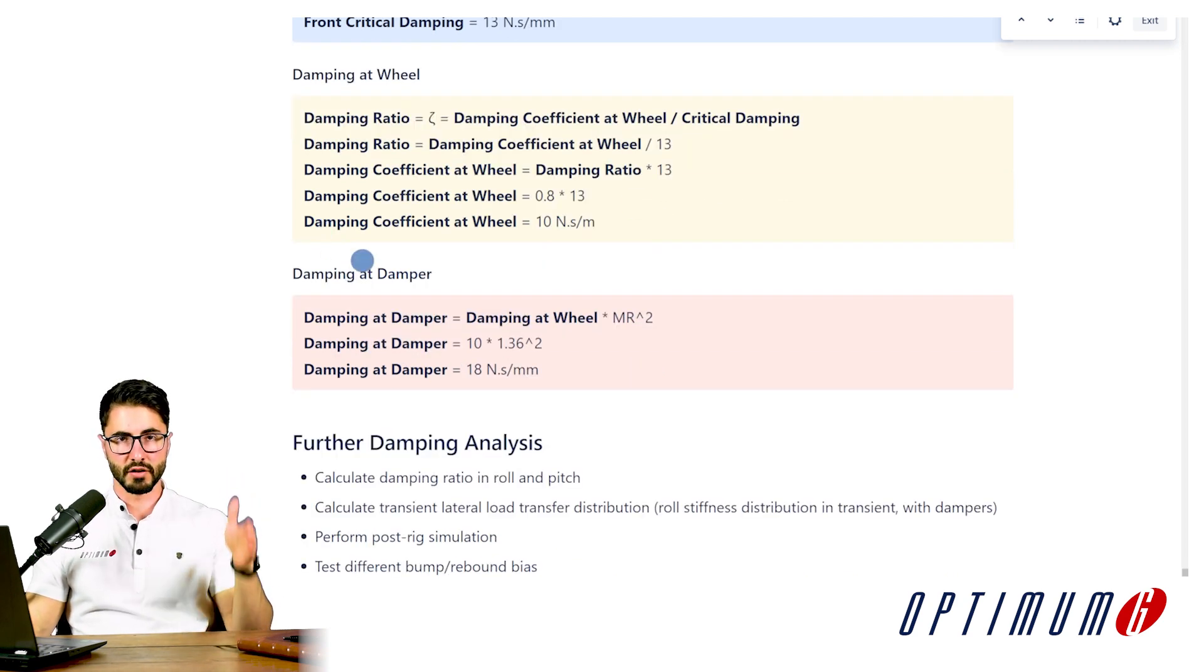In order to convert from system level to component level, we have to use the motion ratio. So the equation is very similar as we've used for springs. So by manipulating this equation over here, we can convert from damping at the wheel at the system to the damping at the damper and we come up with a number of 18.